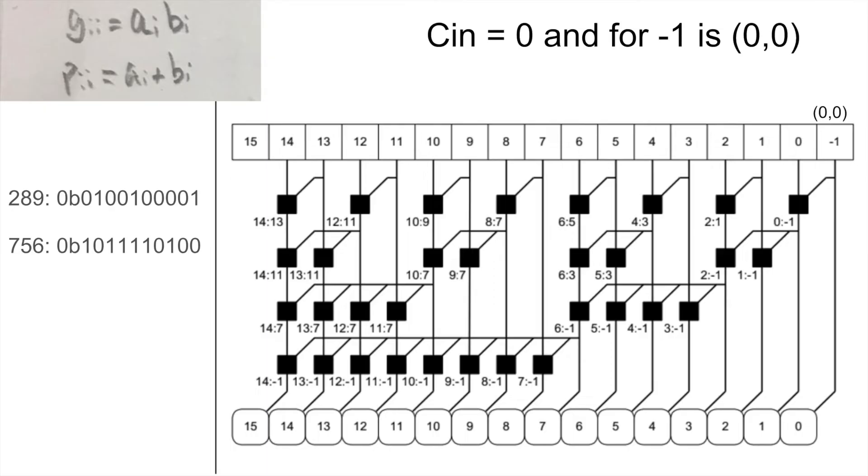Let's do an example. As I have said in the previous slide, the negative one part you put in 0, 0, and then the cin will be 0 as always. In this case, let's take the last bit from the 289, 1 and the last bit from 756, 0. Then 1 and 0 you generate 0, then you put in to the generate. And then for the propagate, it's the 1 or 0. Then you get 1, then you put in to propagate. So for the index 0, basically g0, 0 and p0, 0, you have 1, 0.